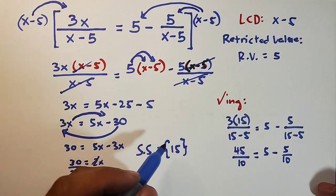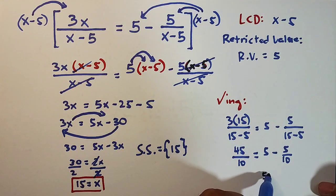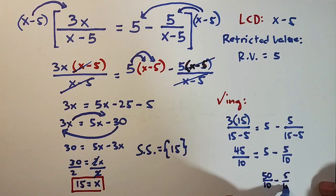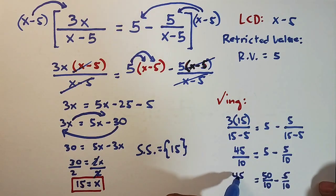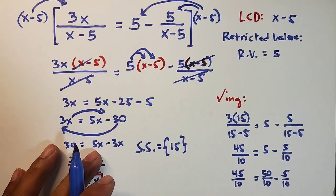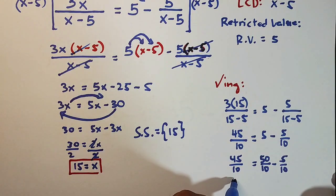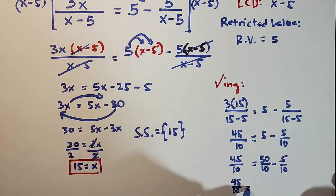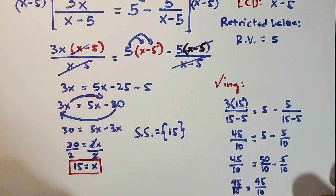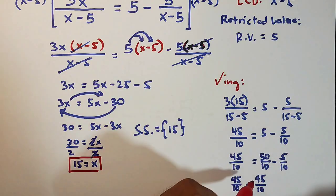So as you can see, this 5 can be expressed as 50 over 10 minus 5 over 10 is equal to 45 over 10. And what we have here, let me adjust this one. This is 45 over 10. And 50 over 10 minus 5 over 10 is simply 45 over 10. As you can see, the two sides of the equation upon checking are equal.